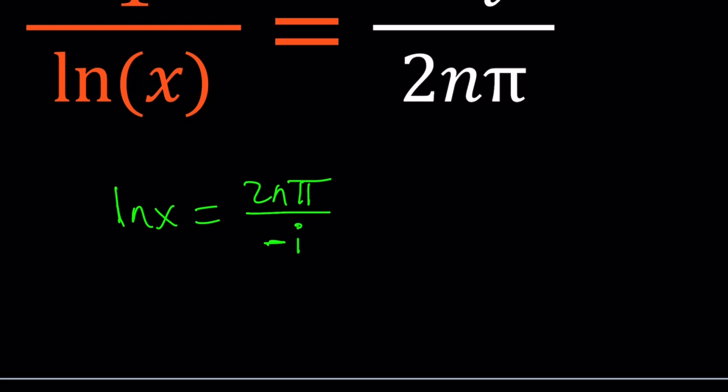That gives us ln(x) equals 2nπ over negative i. Obviously, you don't want a negative i at the bottom either, so let's multiply the top and the bottom by i. Normally, I would multiply by negative i if I had an i at the bottom, but since negative i and i are conjugates, I can just multiply negative i by i to get negative i squared. What is negative i squared? If you said 1, you're right about it, because i squared is defined as negative 1.